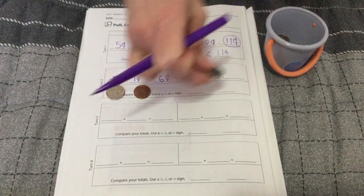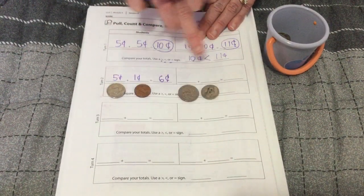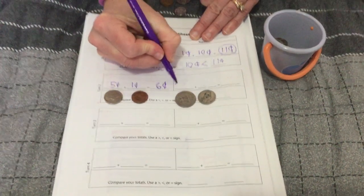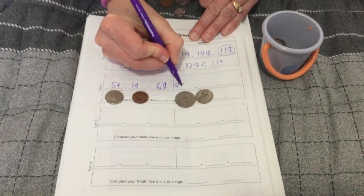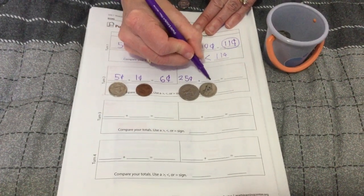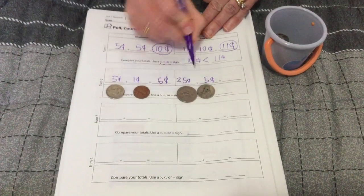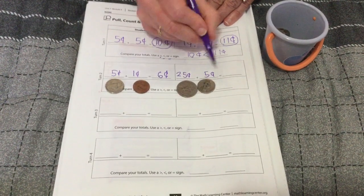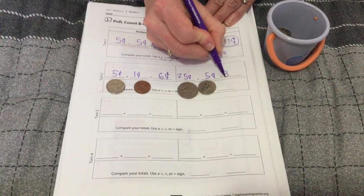And a quarter and a nickel. Twenty-five cents plus five cents equals, counting on five more, would be thirty cents.